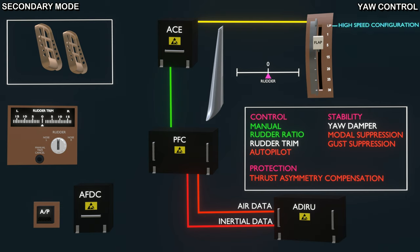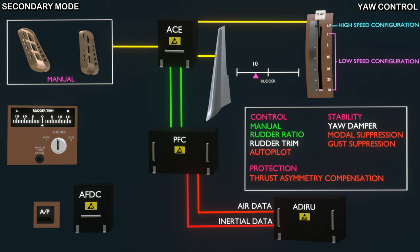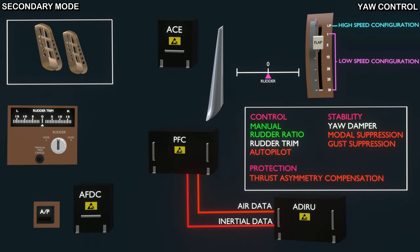If the flaps are in the up position, the computer will assume the aircraft is in a high-speed configuration. And if the flaps are in any other position, the aircraft is in a low-speed configuration. For a maximum pedal deflection with flaps down, the rudder will be deflected to its maximum of 27 degrees. And with the flaps up condition, the deflection will be restricted to a maximum of 10 degrees. The effectiveness of the rudder will not be constant, but the rudder will be structurally protected at high airspeed. The yaw damper function will be available if some of the inertial data is still received by the flight computer. If an engine fails when the flight computer is in the secondary mode, even though the thrust asymmetry compensation is not available, the rudder trim can be used to compensate for the yaw caused by uneven thrust.